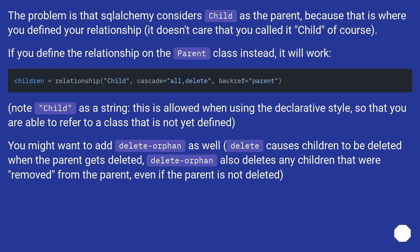The problem is that SQLAlchemy considers the child class as the parent, because that is where you defined your relationship — it doesn't care that you called it 'child' of course. If you define the relationship on the parent class instead, it will work.